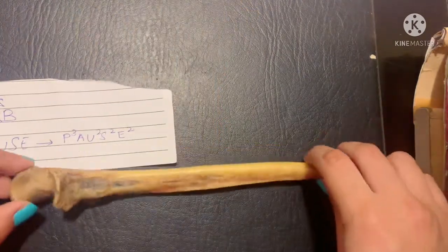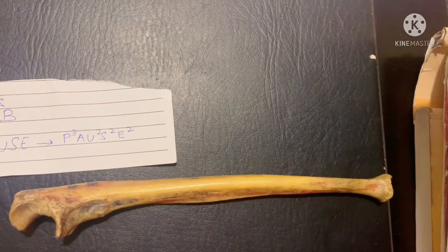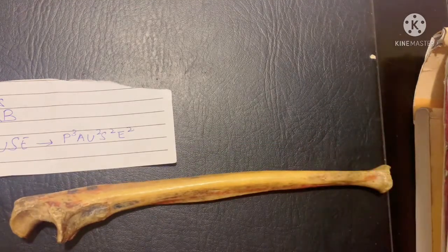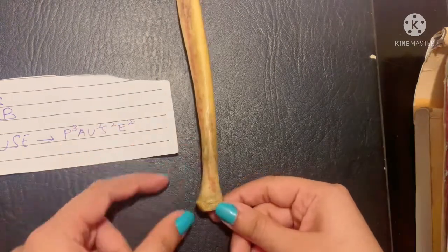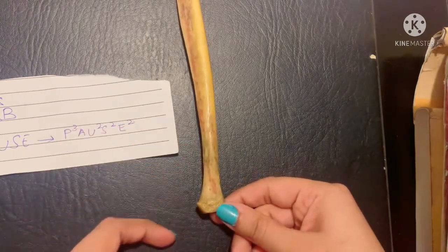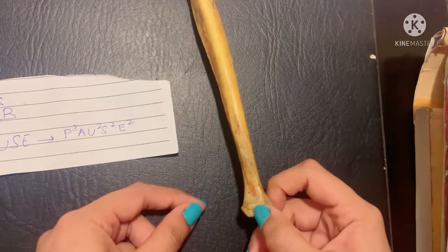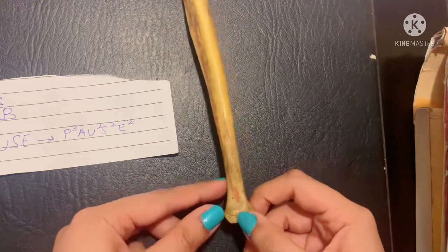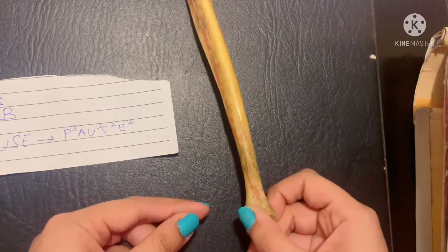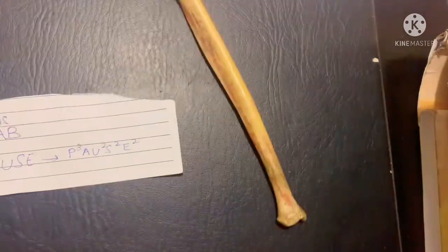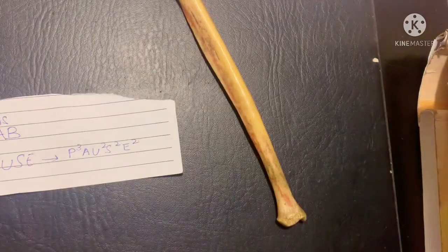That was all about the origins and insertions of the ulna bone. The clinical correlation includes Madelung's deformity. This occurs due to retarded growth of the lower end of the radius, which causes dorsal subluxation — that is, dislocation of the ulnar head or the lower end of the ulna. Thank you so much for watching.